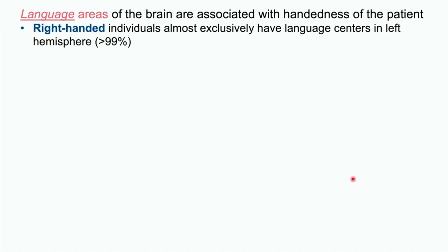Now let's talk about the anatomy and where the language areas are located in the brain. The language areas of the brain are actually associated with the handedness of the patient. This is why when a patient has a stroke, the clinician is going to ask what is their dominant hand, because this will help indicate whether the language centers are in the left or right hemisphere. Right-handed individuals are going to almost exclusively have their language centers in the left hemisphere — greater than 99% of right-handed individuals.